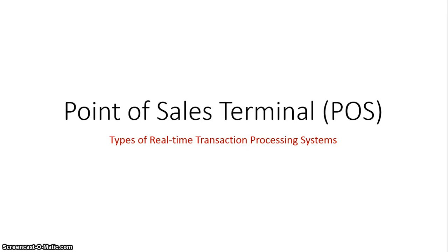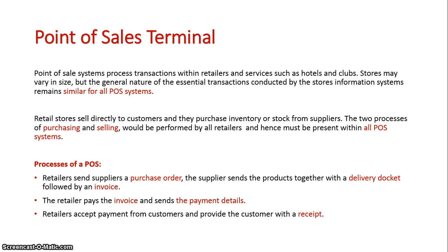We're now going to look at how a point-of-sales terminal works, which is a type of real-time transaction processing system. Basically, with a point-of-sales terminal, it's those computers that sit at the front of stores. When you go up and scan your products to make a sale, it adds up your totals and decreases the amount from the store's inventory.